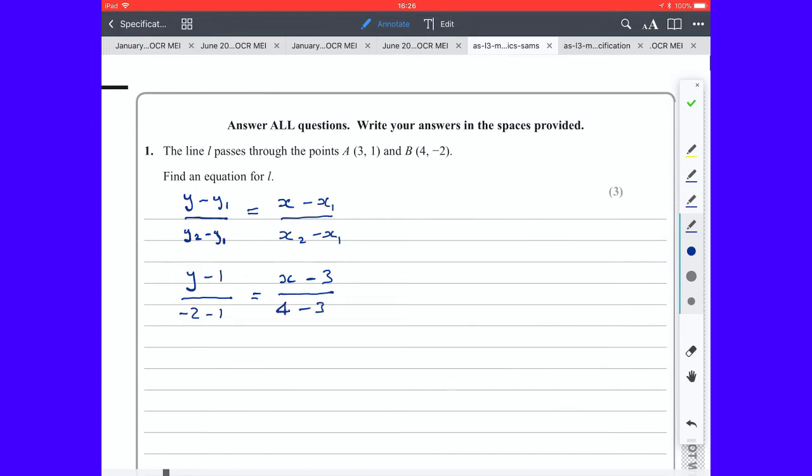Next we tidy up the denominators and we get (y - 1) over -2 minus 1 is -3. (x - 3) over 4 minus 3 is 1.